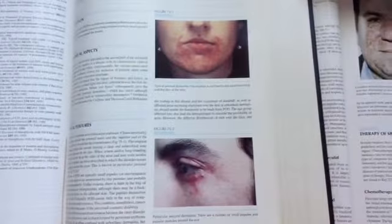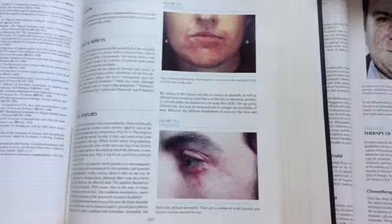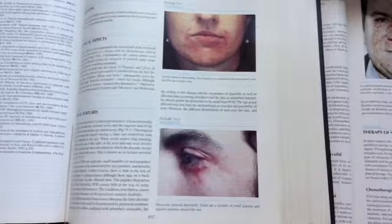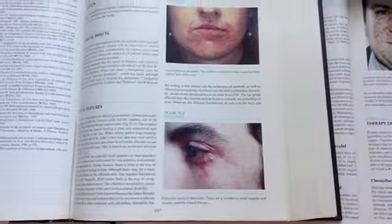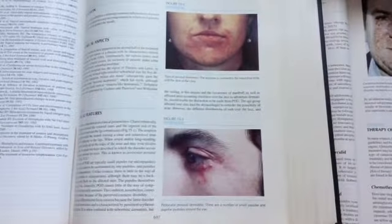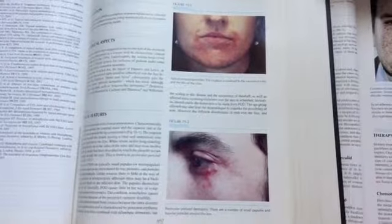You can see the perioral dermatitis at the upper picture, the eruption on the nasolabial folds and skin of the chin and free the vermilion border of the lip. There is here also periocular dermatitis down, small papules and pustules around the eye. And this was the acne form eruption. Thank you very much.